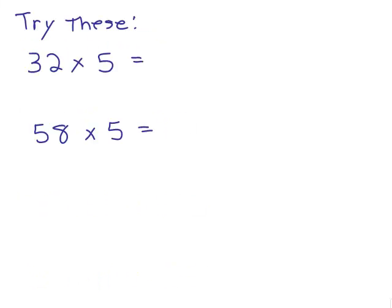Try these. These are a little bit harder to take half of for some people, but you could divide by 2 if you want. All right, so 32 times 5, if you take half of 32, you get 16, add the 0.